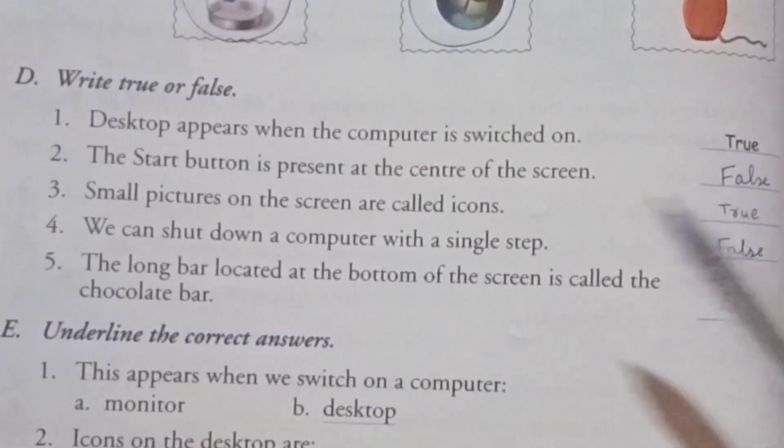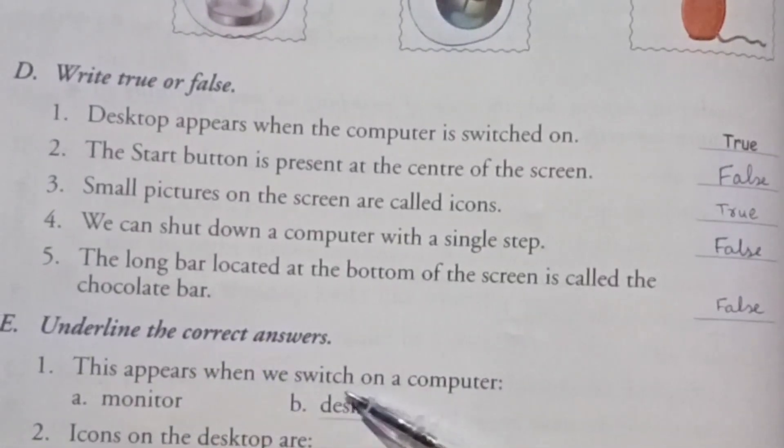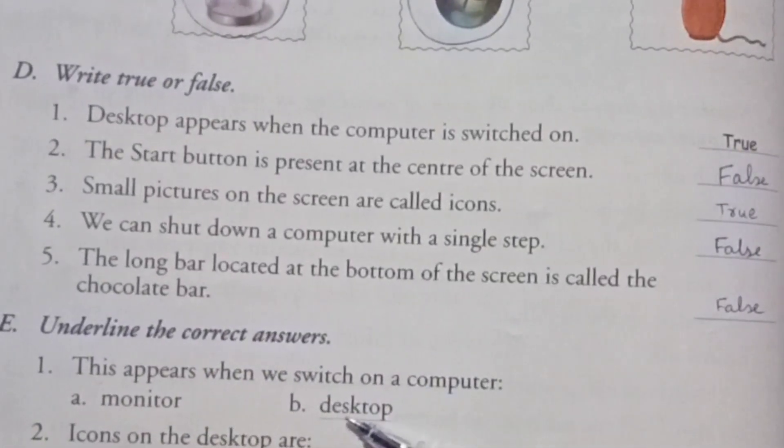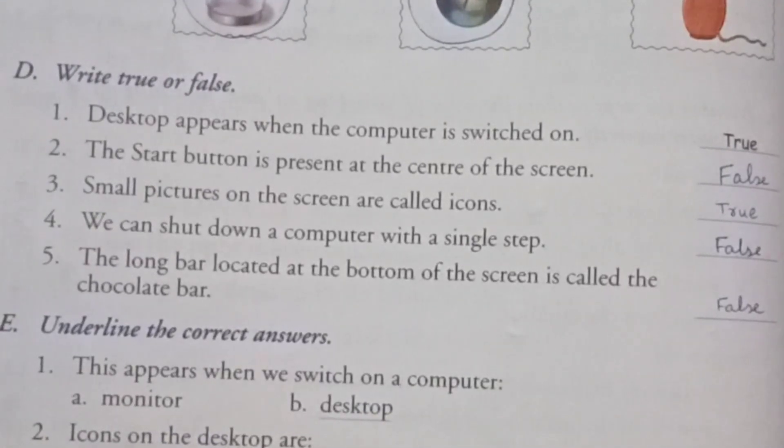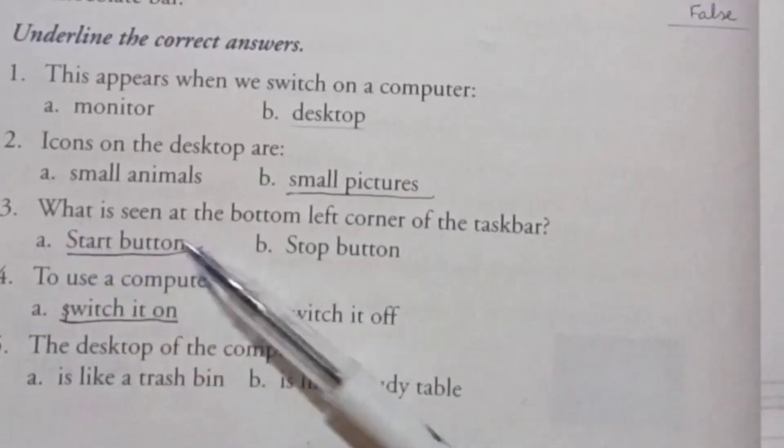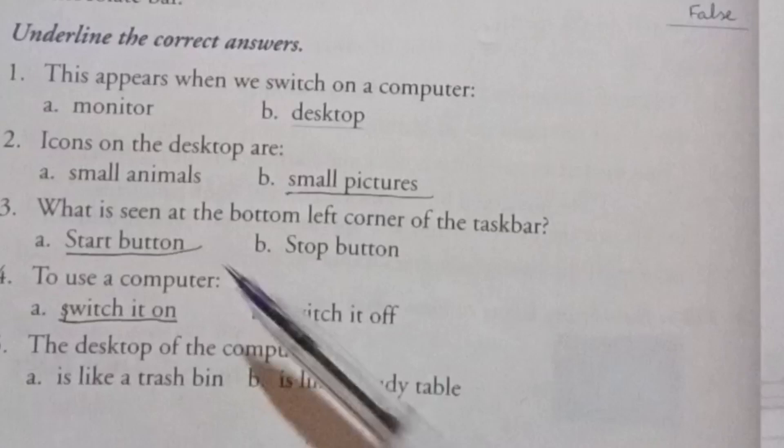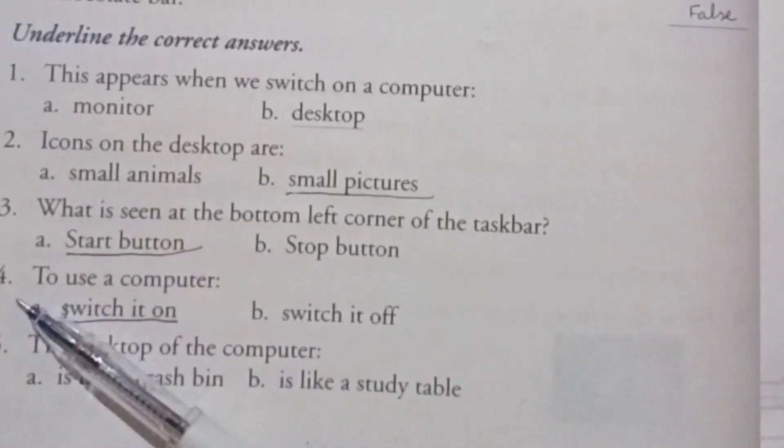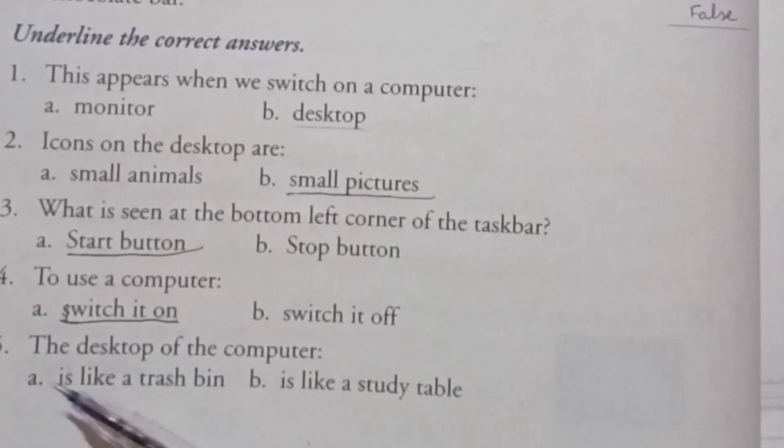The long bar located at the bottom of the screen is called the taskbar. False. Underline the correct answer: First, this appears when we switch on the computer: the desktop. Second, icons on the desktop are small pictures. Third, what is seen at the bottom left corner of the taskbar? The start button.